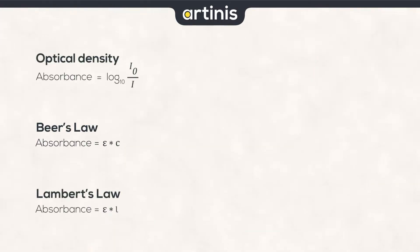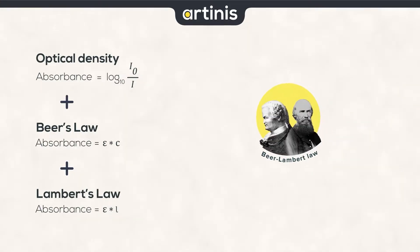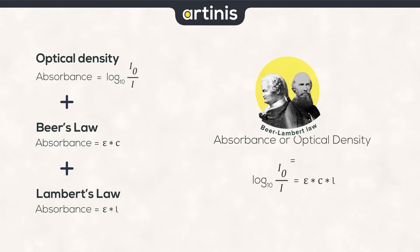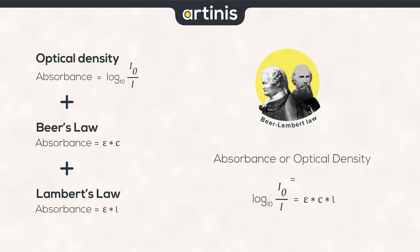Combining all these formulas gives us the Beer-Lambert law, written as the following equation. The absorbance equals the logarithm of the incoming light divided by the outgoing light, which equals molecular extinction coefficient times concentration times length.